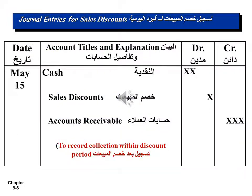Journalizing the payment within the discount period: the purchaser can receive the sales discount. Cash, debit for the net amount; Sales Discount, debit; Accounts Receivable, credit for the total. Description: to record collection within discount period.